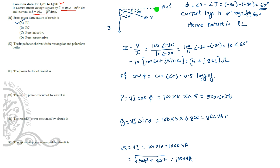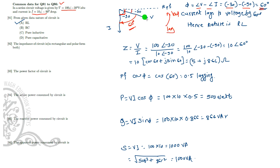With respect to the reference, the voltage is lagging by 30° and the current is lagging by 90°. The angle between voltage and current is: angle of V minus angle of I = −30° − (−90°) = 60°. This indicates that the current is lagging the voltage by 60°, hence the circuit nature is RL.